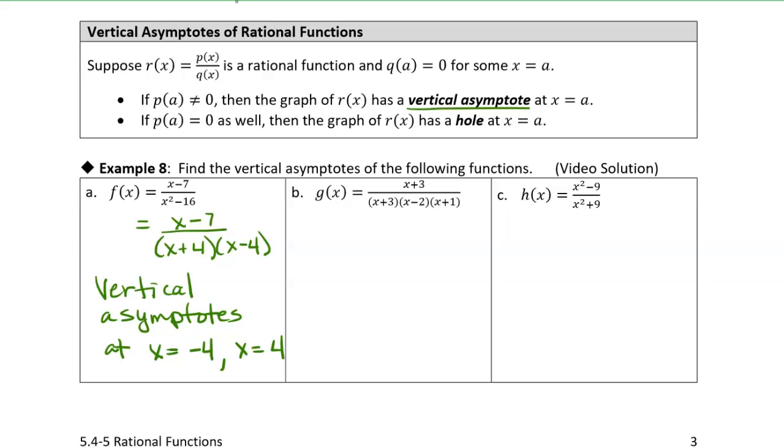Now, this is again the same function that we saw in the last example. Here we have a common factor which will cancel except at x equals minus three. So just like we saw before, we're going to have a hole at x equals minus three. And outside of x equals minus three, you can see the denominator would be zero at x equals two and x equals minus one.